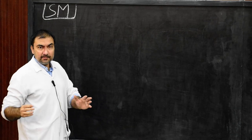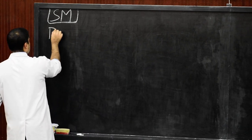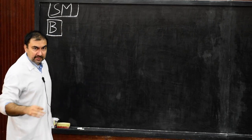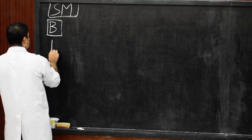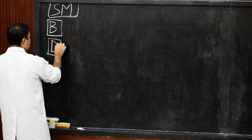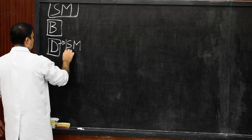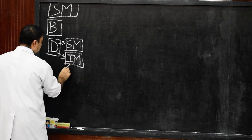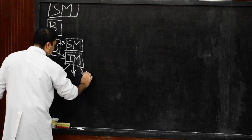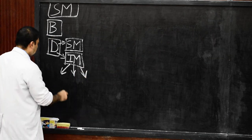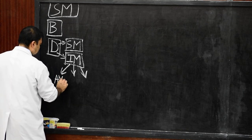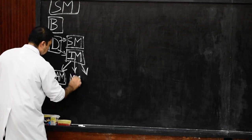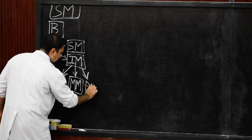First we are going to discuss the entire boundaries of mediastinum, which will form the definition and boundaries of mediastinum. Including the boundaries, we are going to divide the mediastinum — division of mediastinum. We divide the mediastinum into superior mediastinum and the inferior mediastinum. This inferior mediastinum is again divided into three: the anterior mediastinum, the middle mediastinum, and then the posterior mediastinum.